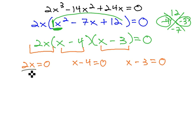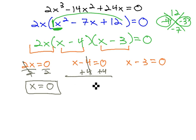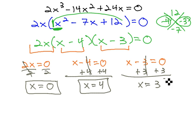Each of these is a one-step equation. We can solve the first by dividing by 2, x = 0, the second by adding 4 to get x = 4, and the third by adding 3, and we found our solution for x of 3. This problem has three solutions that make the equation true: 0, 4, and 3.